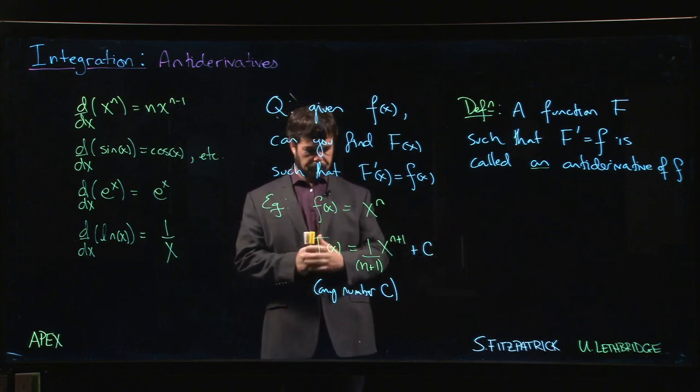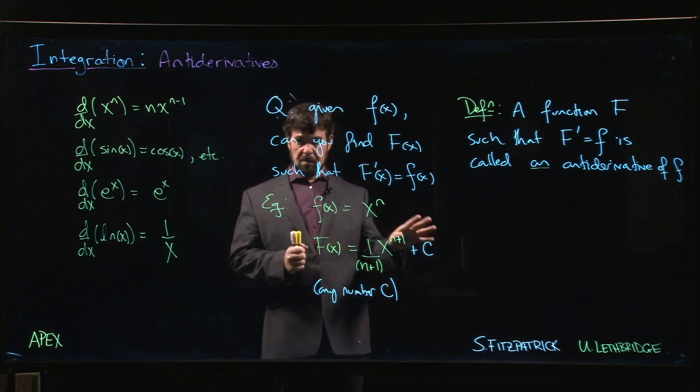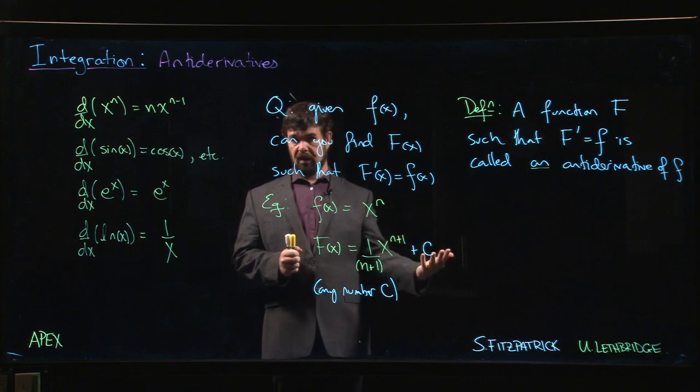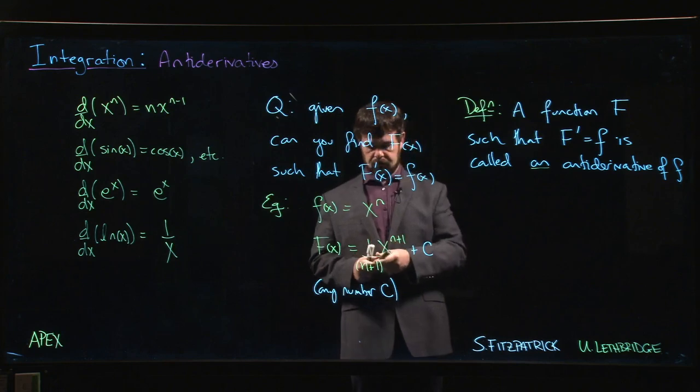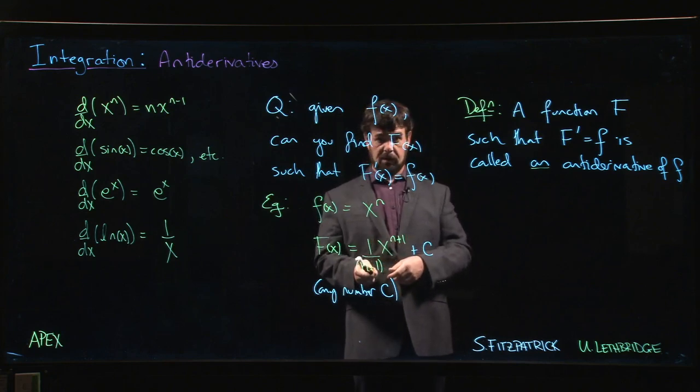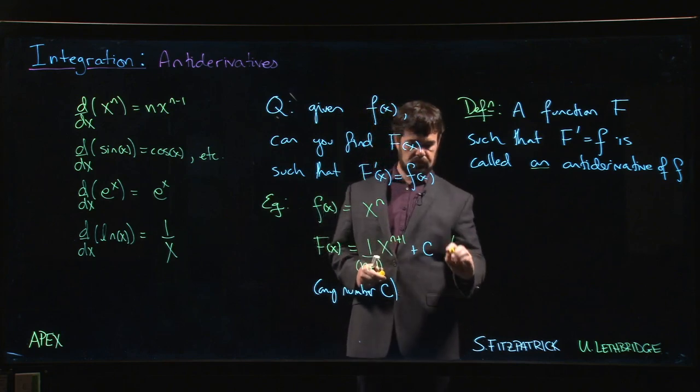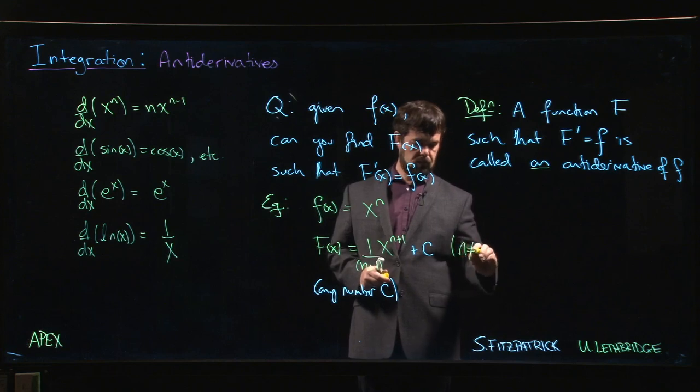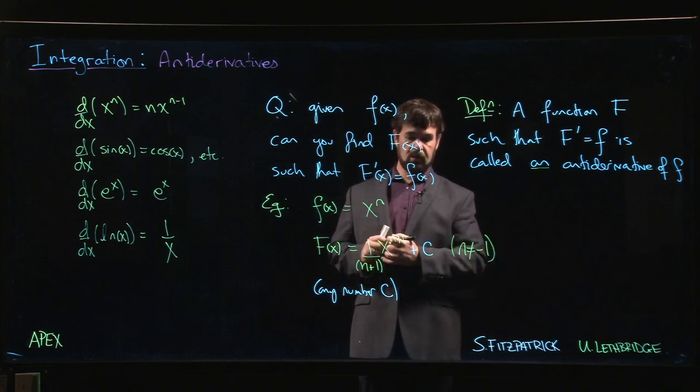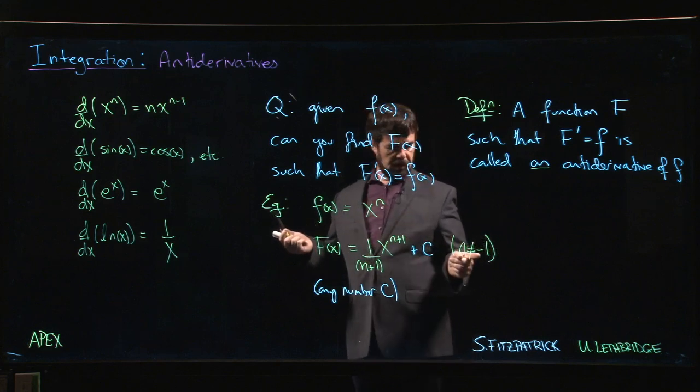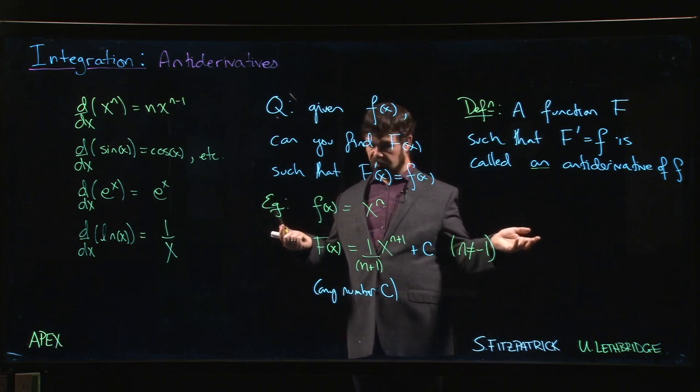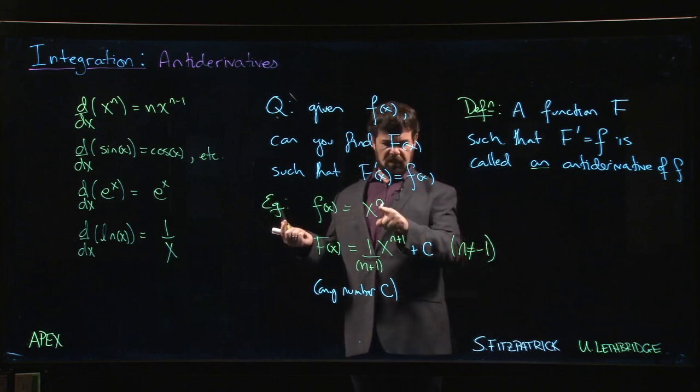Before we end this video and move on to look at some other aspects of antiderivatives, note that there's one catch here: there's a value of n where this doesn't make sense. n is equal to minus one—I'd be dividing by zero. So we say okay, wait, so this is not perfect. The power rule doesn't quite work in reverse.